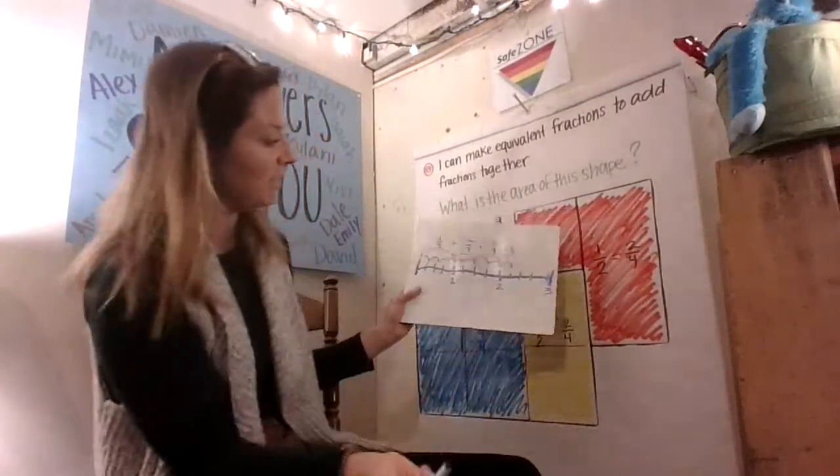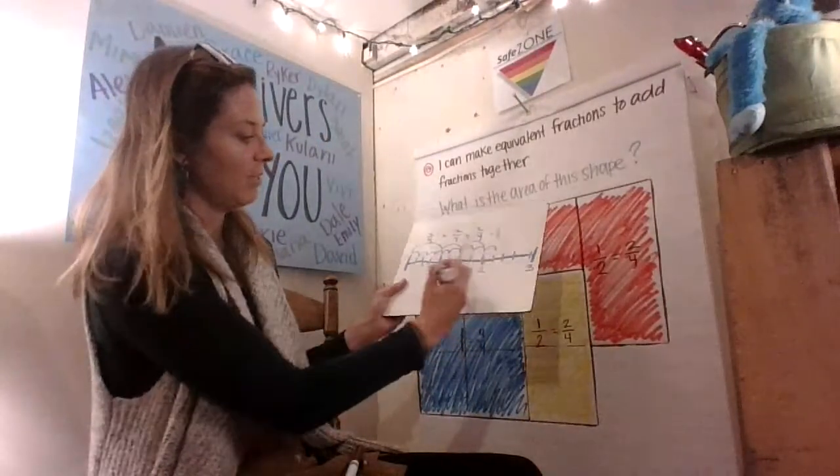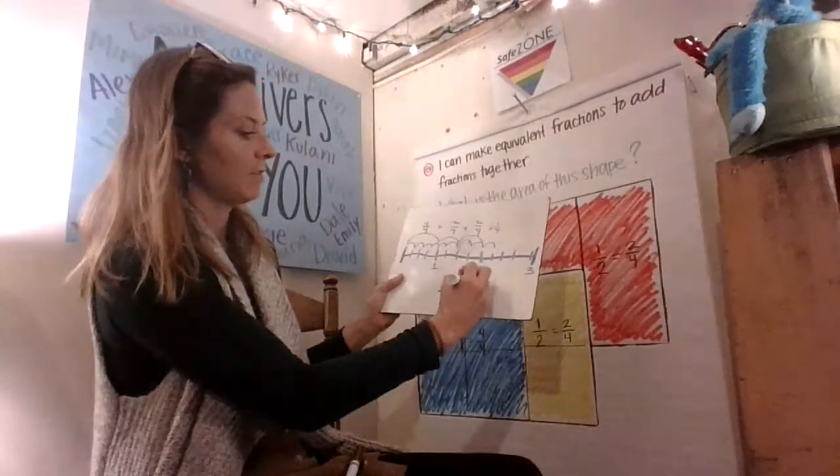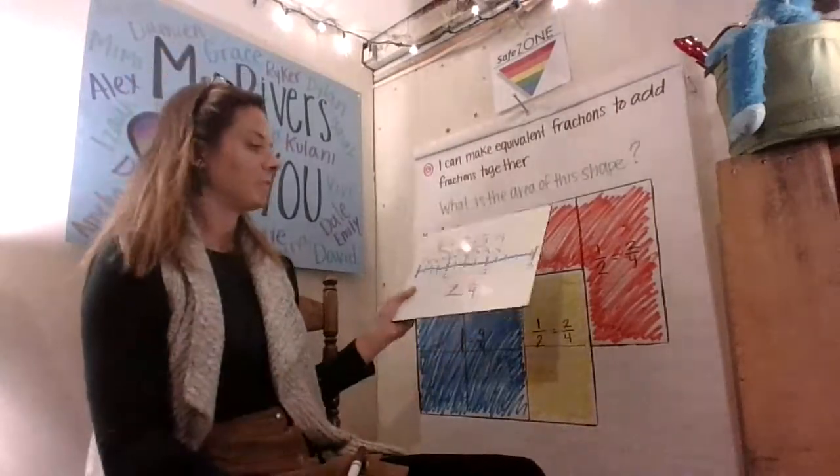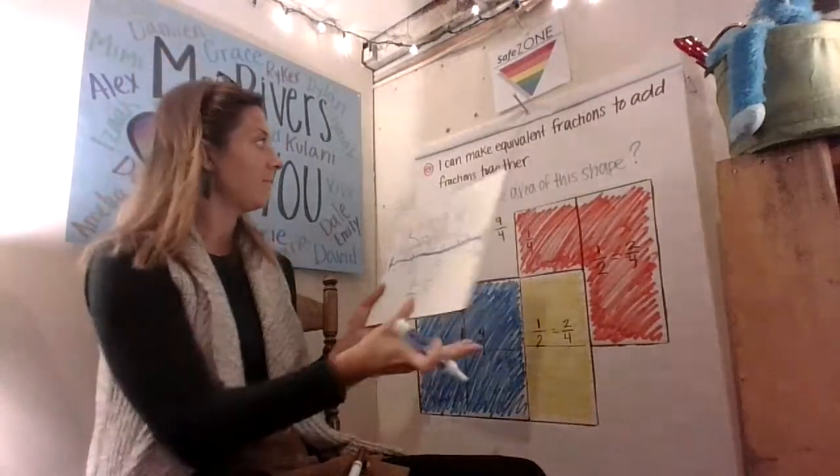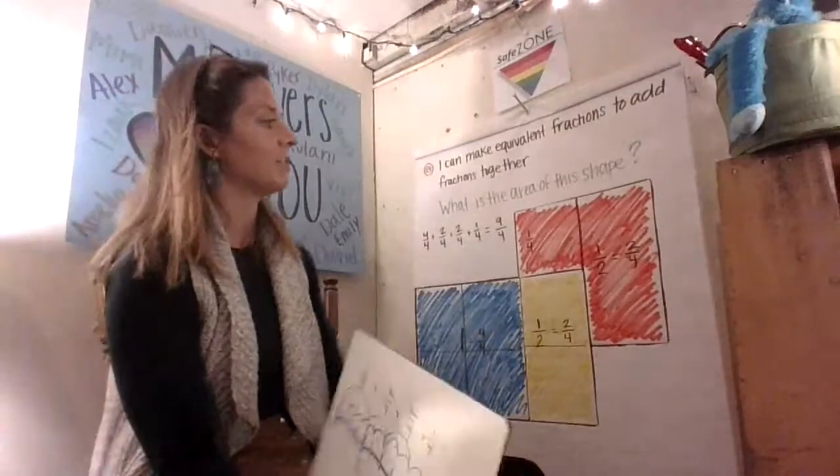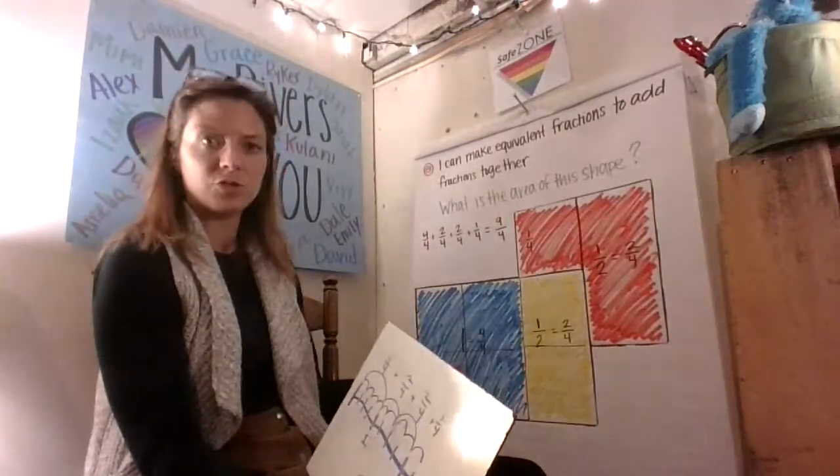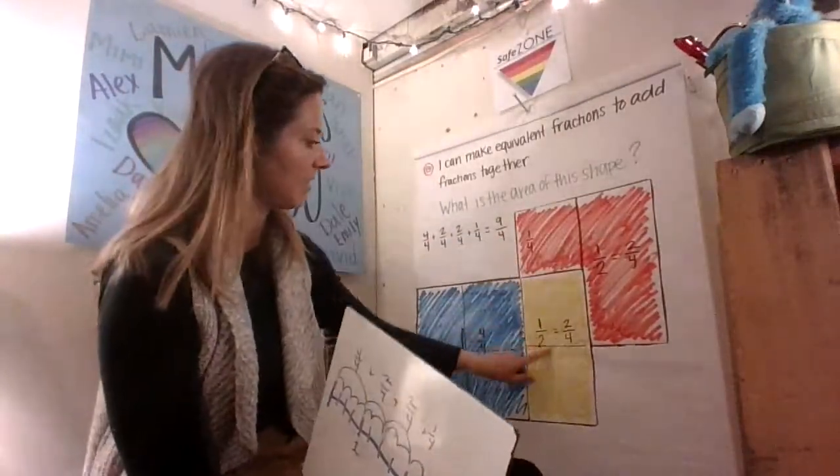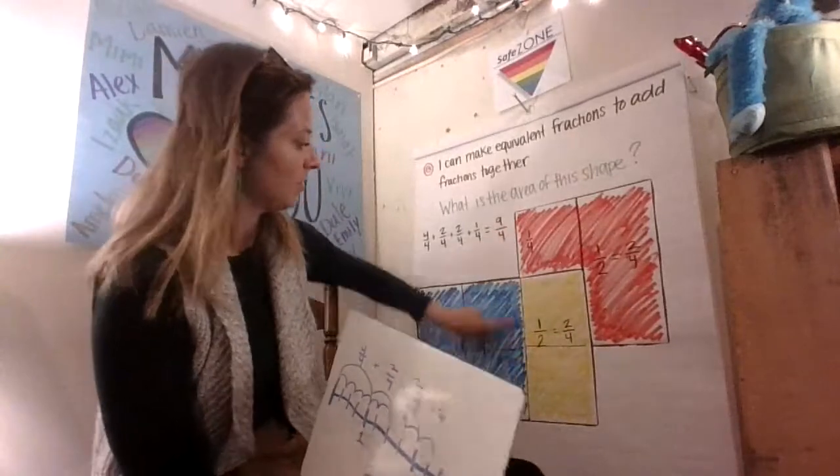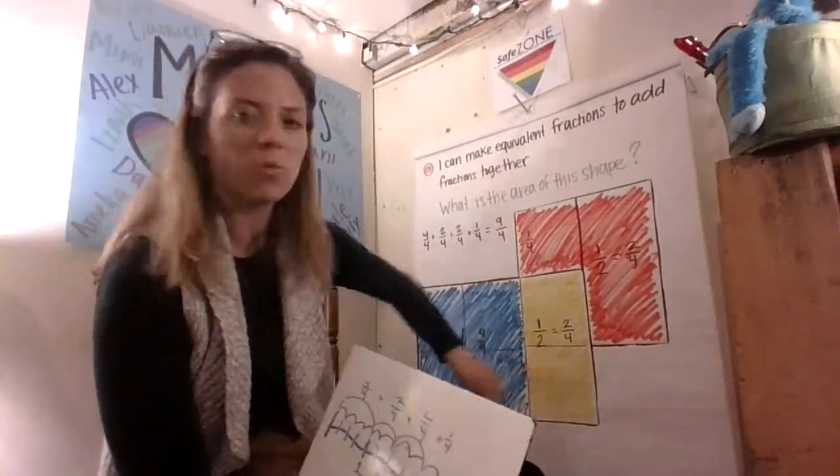That means I have a total of two and one fourth, which means my answer to this problem, what is the area of this shape, is two and one fourth. I can almost see that here.